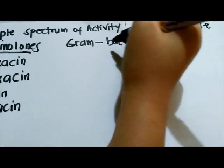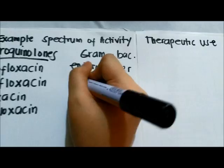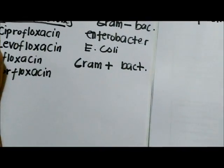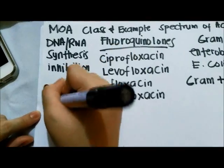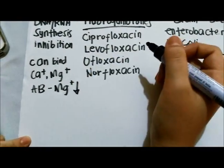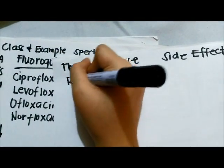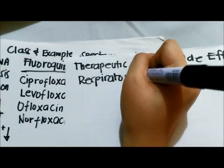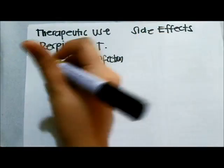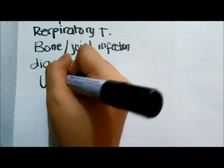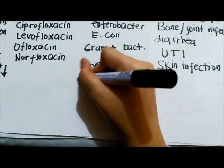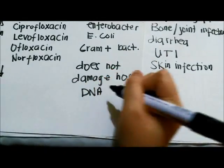Quinolones usually work against gram-negative bacteria like Enterobacter and E. coli, and also for UTI, but they can also go against some gram-positive bacteria. They bind with calcium and magnesium, and as they combine with them, the effect of the antibiotic will decrease, so you must not take them with other drugs that contain calcium or magnesium. They can be used for respiratory tract infections, bone or joint infections, diarrhea, UTI, and skin infections. An important point is that fluoroquinolones do not damage human DNA.